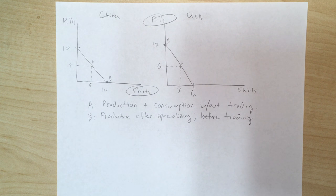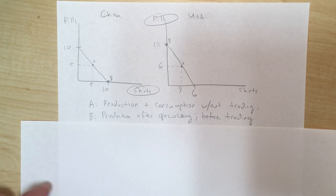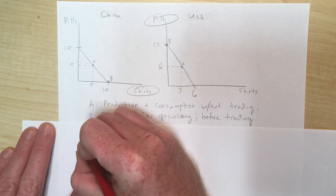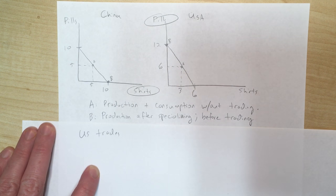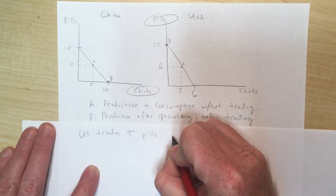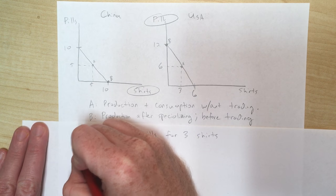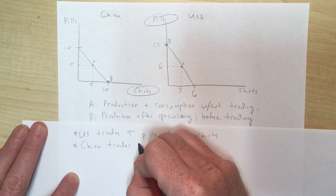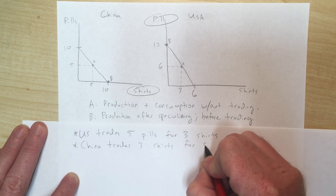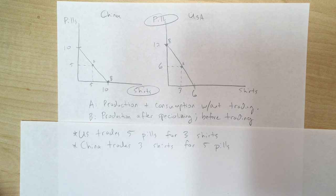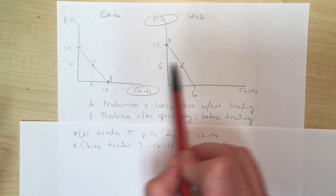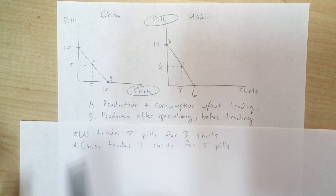Now we need to figure out a trade that will make these countries better off — this is the hard part. Let's say the US trades away 5 pills for 3 shirts, or from China's perspective, China trades 3 shirts for 5 pills. All we're doing is starting from point A where they wouldn't trade, specializing, setting up a trade, and seeing if it makes both countries better off.